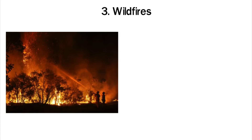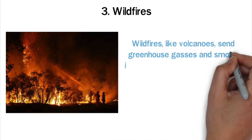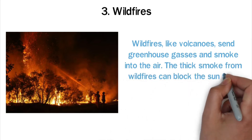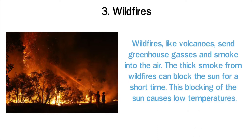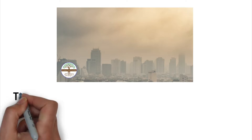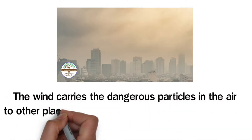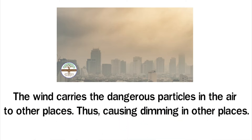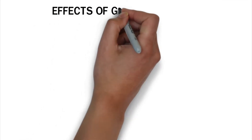Third, wildfires. Wildfires are more common because of the rise in global temperatures. Fires start in most parts of the United States and Australia every year. Wildfires, like volcanoes, send greenhouse gases and smoke into the air. The thick smoke from wildfires can block the sun for a short time, causing low temperatures. Smoke particles can also make clouds more reflective. It may take time for the smoke from wildfires to go away. However, the clouds have long-term effects on areas around fires. The wind carries the dangerous particles in the air to other places.